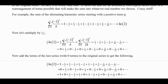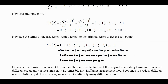Now I'm going to take the original series and add this one. On one hand, I'm adding log 2 plus 1/2 of log 2, so I get 3/2 log 2. And on the other hand, I should be able to add these up term by term: 1 plus 0 is 1; negative 1/2 plus 1/2 is 0; 1/3 plus 0 is 1/3; negative 1/4 plus negative 1/4 is negative 1/2; 1/5 plus 0 is 1/5; negative 1/6 plus 1/6 is 0; 1/7 plus 0 is 1/7; negative 1/8 and negative 1/8 is negative 1/4; 1/9 and 0 is 1/9; negative 1/10 and 1/10 is 0; 1/11 and 0 is 1/11; negative 1/12 plus negative 1/12 is negative 1/6.